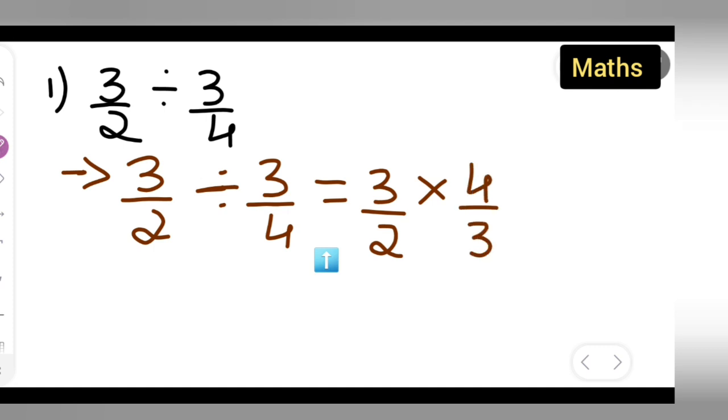So here you can cancel directly. 3 ones are 3, 3 ones are 3, 2 ones are 2, 2 twos are 4. So basically what answer you're going to get is nothing but 2. So I hope you have understood how to divide 3 upon 2 by 3 upon 4.